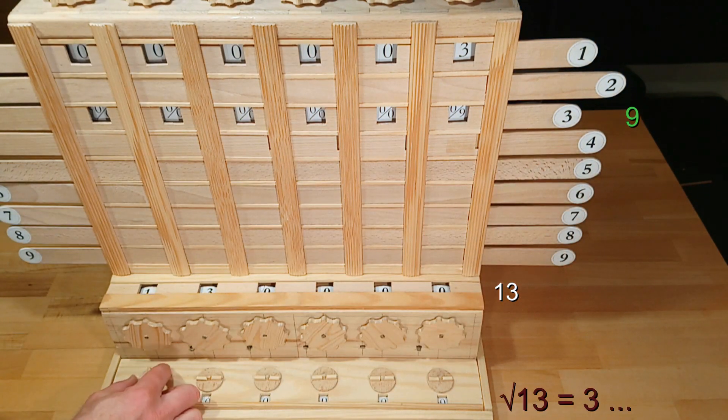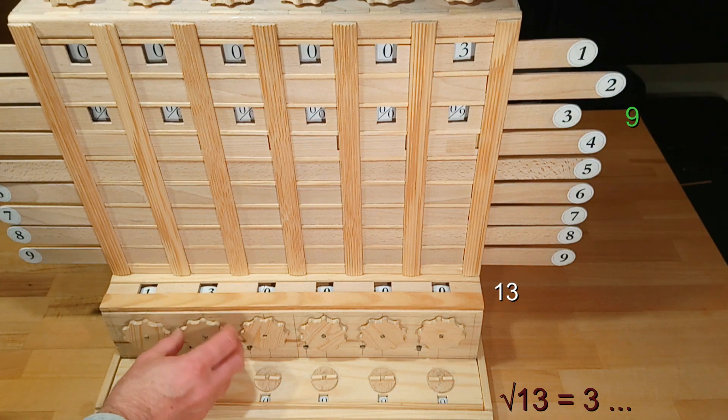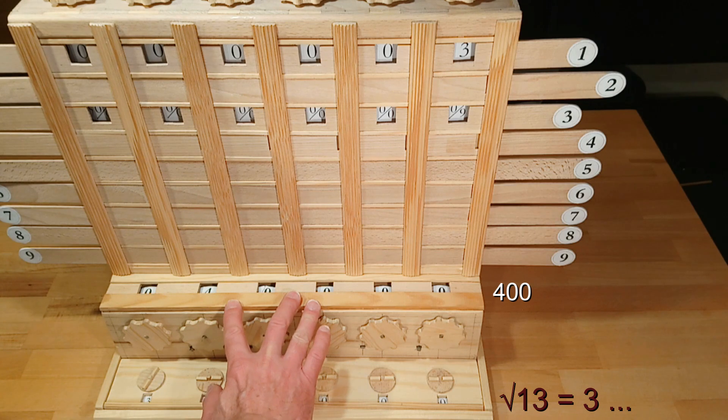I'm entering it in the result memory and now we have to subtract 9 from 13 in the adder. For the calculation of the next digit we have 400 left.